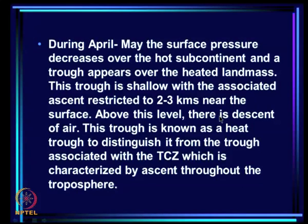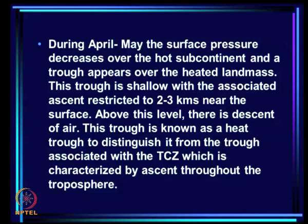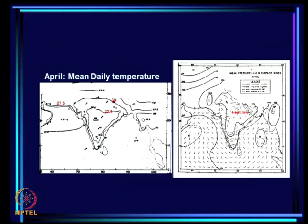During April–May, the surface pressure decreases over the hot subcontinent and a trough appears over the heated landmass. This trough is shallow, with the associated ascent restricted to 3 kilometres near the surface; above this level there is descent of air. This trough is known as the heat trough, to distinguish it from the trough associated with the TCZ, which is characterized by ascent throughout the troposphere. We have seen the difference between heat low and dynamic low in earlier lectures.